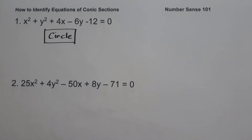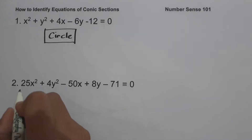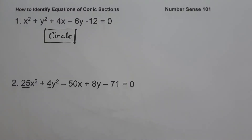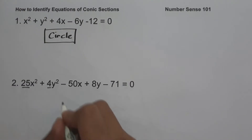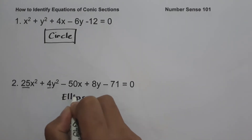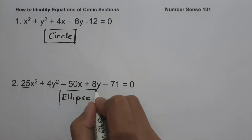On number two, we have 25x² + 4y² − 50x + 8y − 71 = 0. Since the coefficient of x² is not equal to the coefficient of y² but they have the same sign, we can say that this equation is an ellipse.